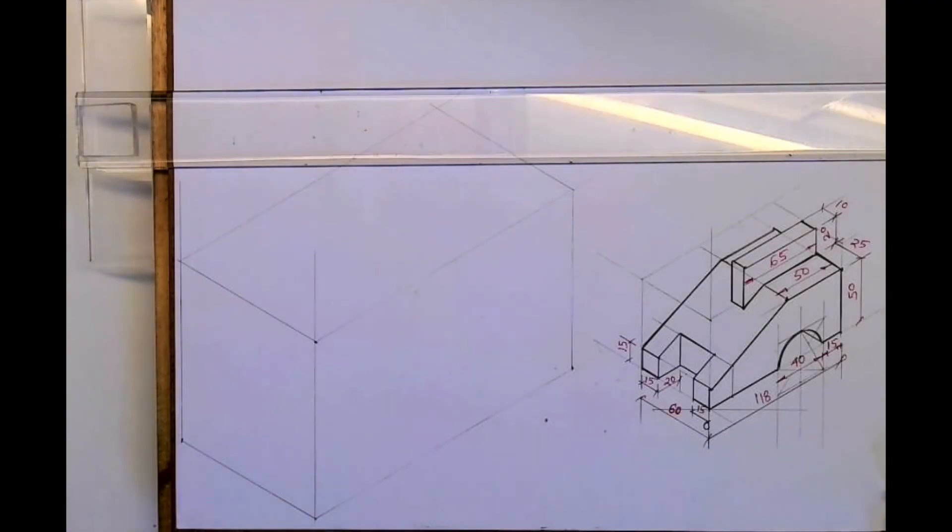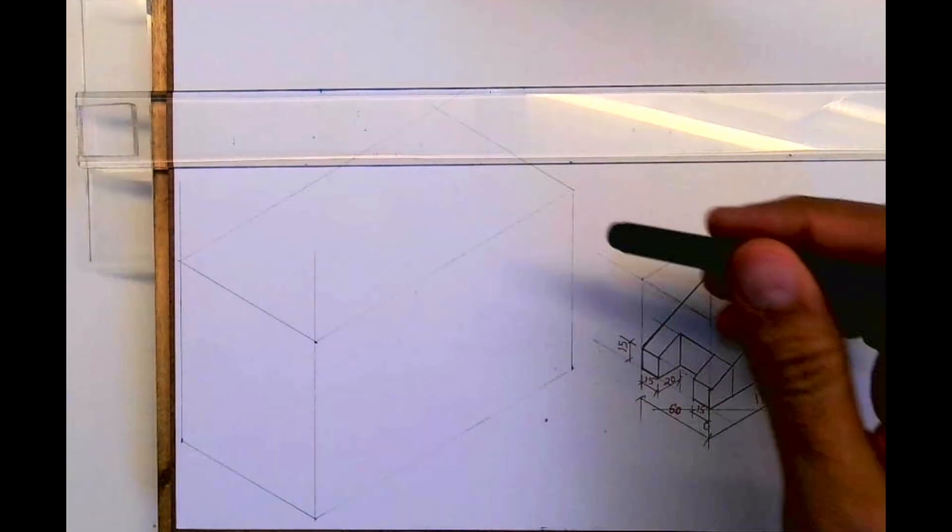Welcome to technical drawing. Today we'll see this sum in isometric copy, and then tomorrow we'll do this same sum in orthographic as well. The length is 118, height is 70, and width is 60. Height is 50 plus 20, making it 70.